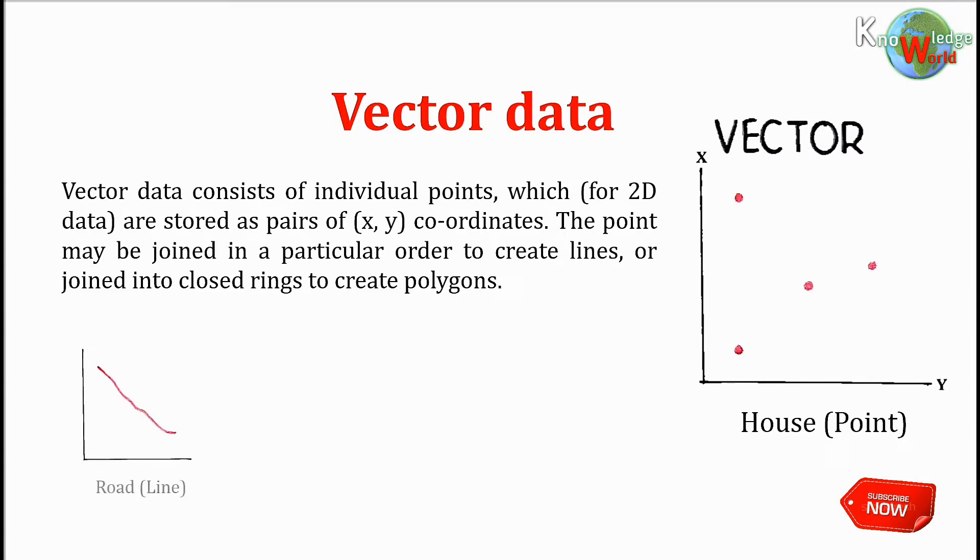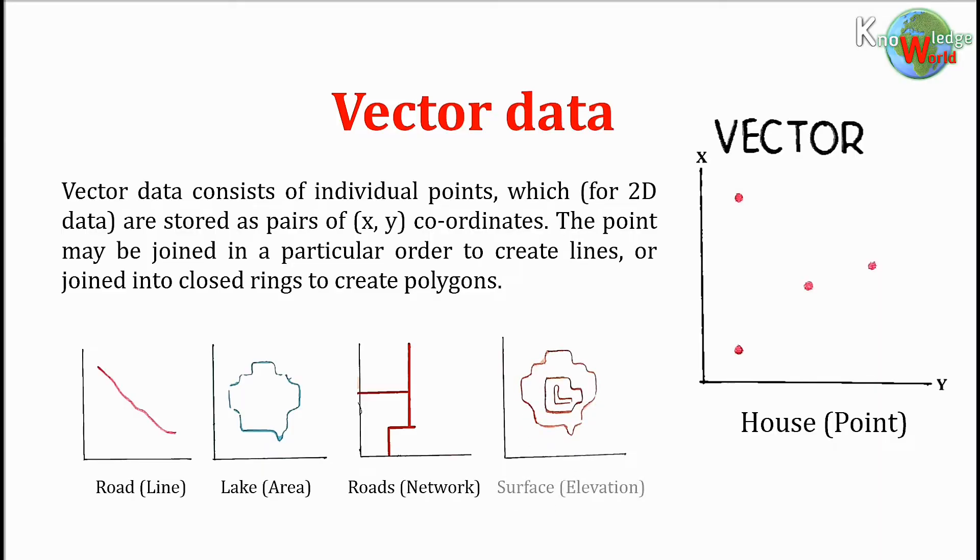All vector data fundamentally consists of lists of coordinates that define vertices, together with rules to determine whether and how those vertices are joined.